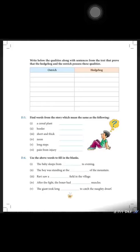First: the baby sleeps from midday to evening. Second: the boy was standing at the edge of the mountain. Ravi saw a barley field in the village. After the fight, the boxer had sore muscles. Last one: the giant took long strides to catch the naughty dwarf. Thank you.